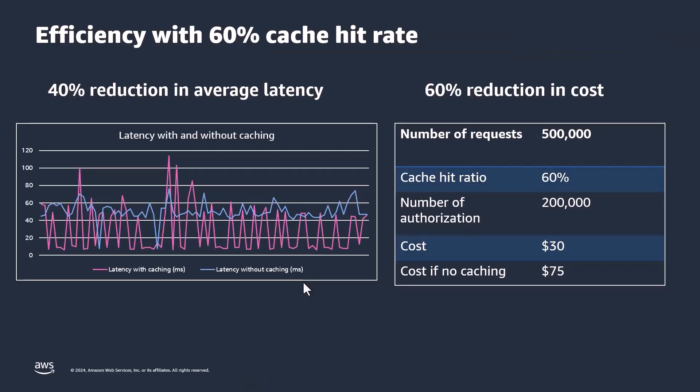At the beginning of the video, I promised to show how this saves latency and cost. I ran an experiment where 60% of my API calls were cached — meaning six out of ten authorization decisions were returned from the cache and the Lambda authorizer and Verified Permissions were not invoked. Based on the experiment, there was a 40% reduction in average latency. I have plotted average latency of requests on the left, with the blue line representing requests that were not cached and the pink line representing requests that were cached.